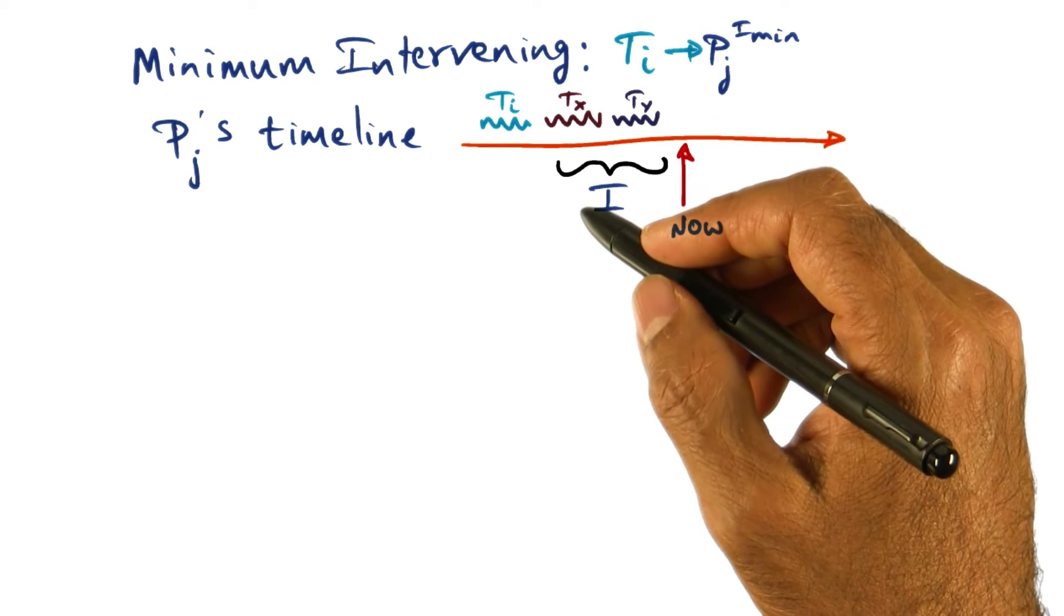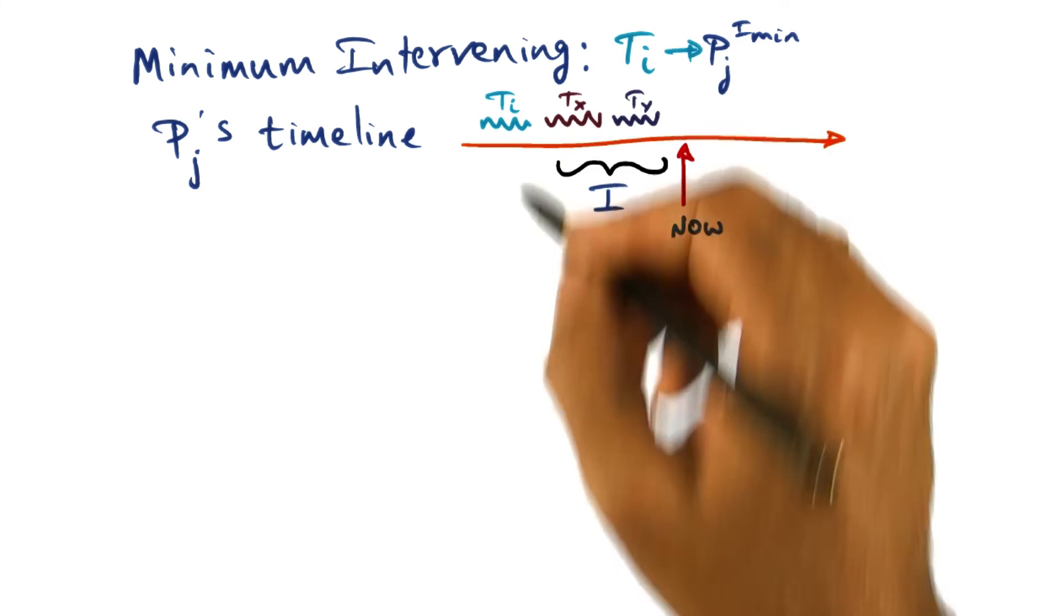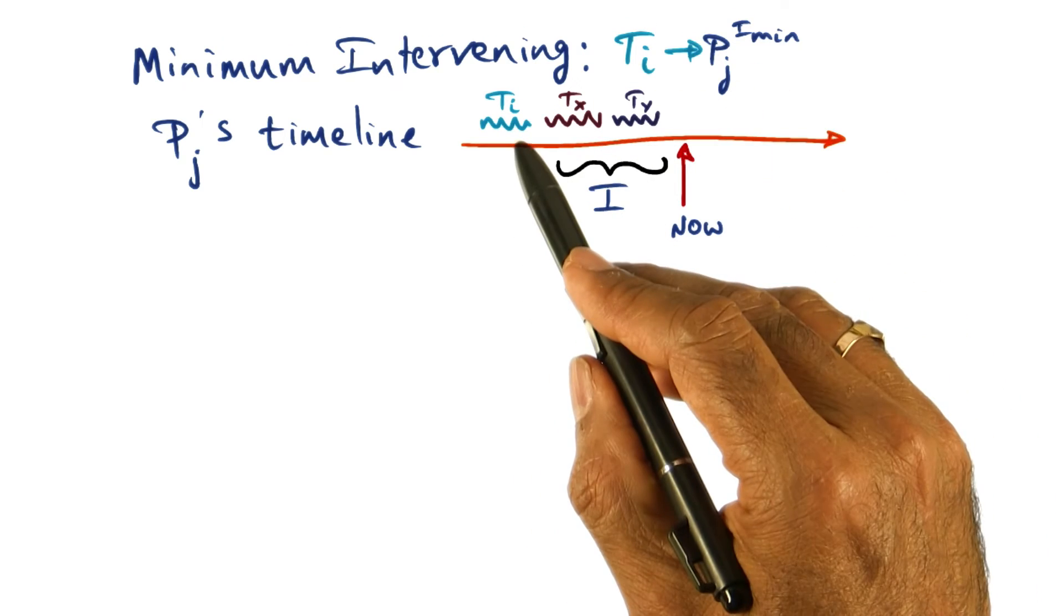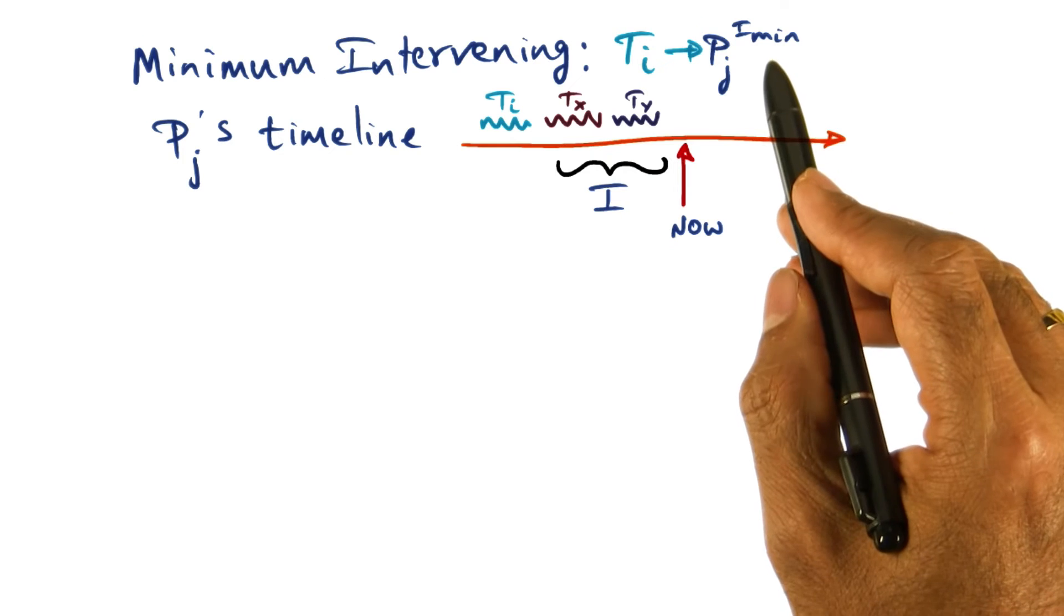And what we want to do is, when it comes time to scheduling TI, I want to pick a processor on which the affinity index is the minimum.